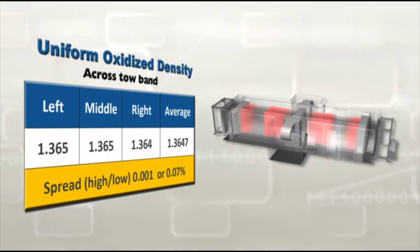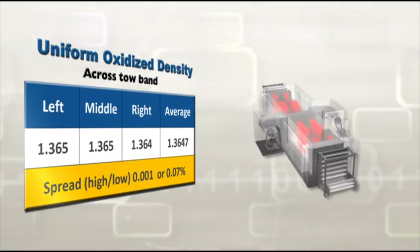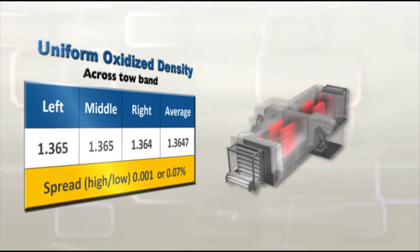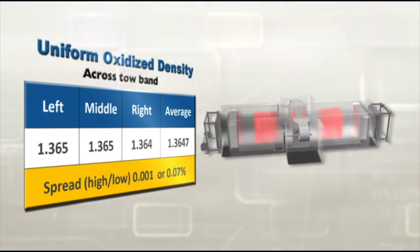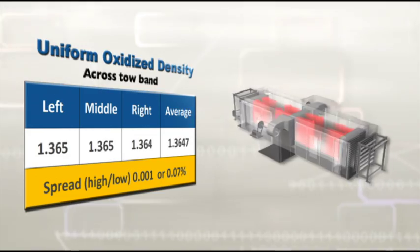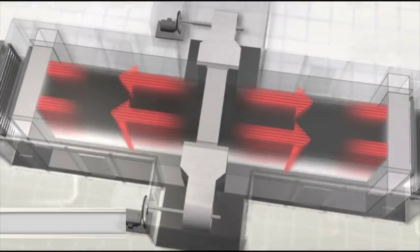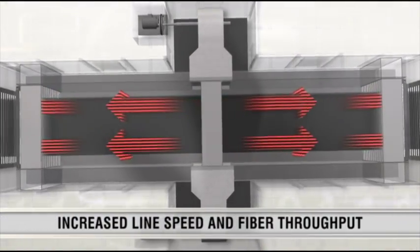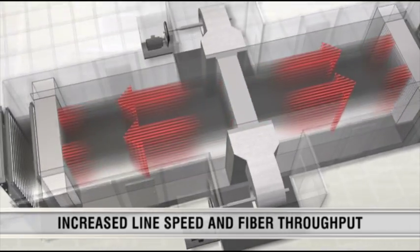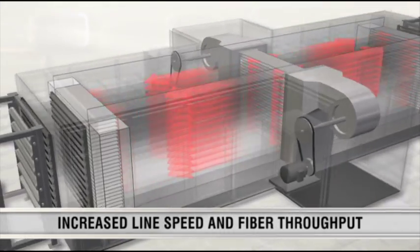Consistent process conditions with uniform temperatures in the working zones ensures higher yields of as much as 30% and uniform oxidized density fiber. Center-to-ends airflow design can increase line speeds and fiber throughput without sacrificing fiber quality.